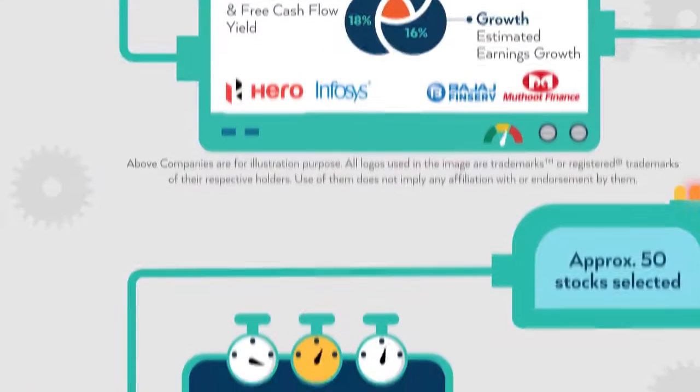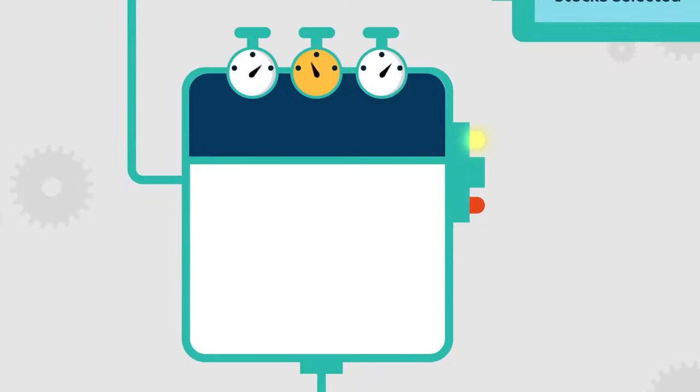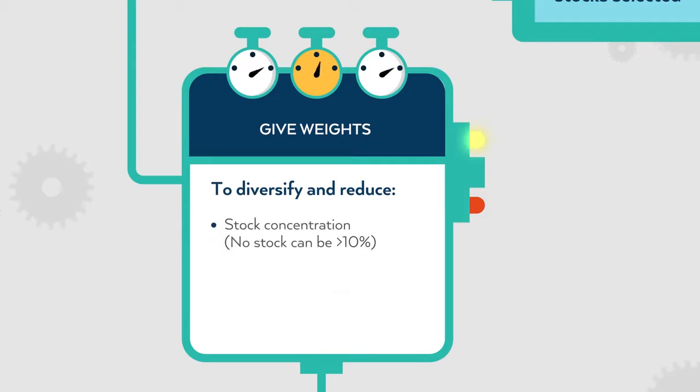These companies then move to the final stage, where appropriate weights are allocated. The weighing process ensures adequate diversification through stock and sector concentration limits and also addresses liquidity risk.